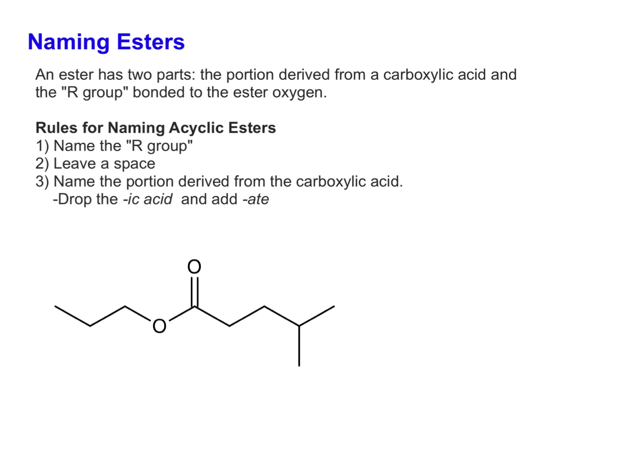In this example, our R group that's on the oxygen is a three carbon chain. That's a propyl group. Then for our portion that's derived from the carboxylic acid, we'll number out our longest carbon chain. So 5 carbon carboxylic acid would be pentanoic acid. So what we're going to do, we're going to drop this IC acid and change that to pentanoate as the parent. The only substituent we have to deal with is on carbon-4, we have a methyl.